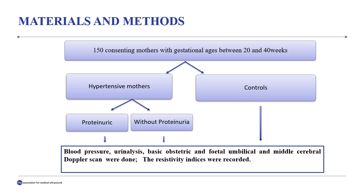There were 150 consenting pregnant mothers with gestational ages between 20 and 40 weeks. There were 75 hypertensive pregnancies with an equal number of control participants. The hypertensive pregnancies were divided into those with proteinuria and those without proteinuria after they underwent urinalysis.